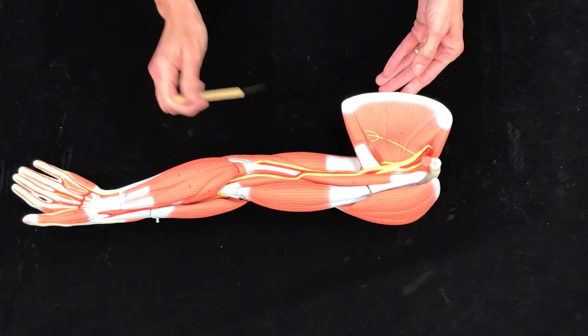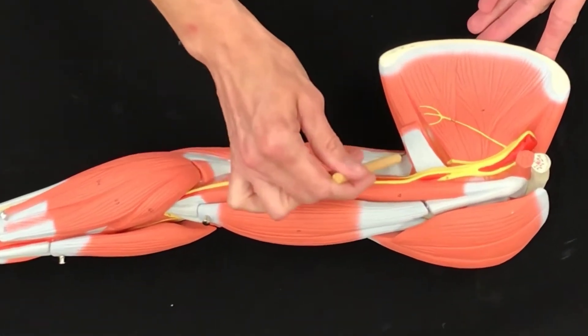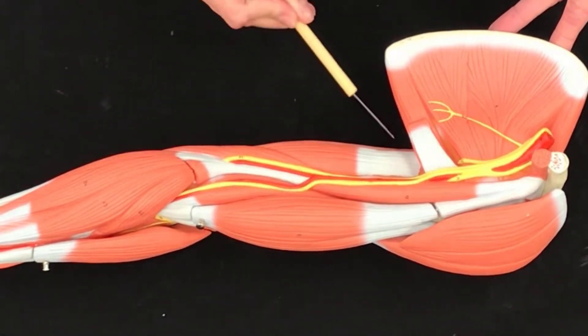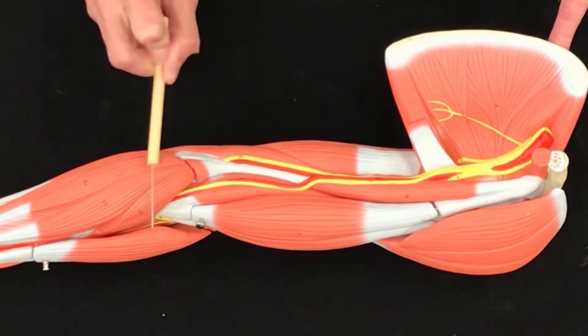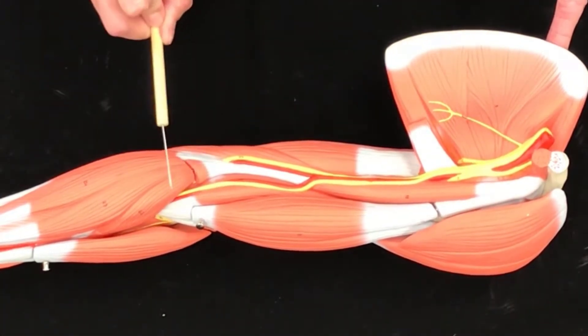So our first area is the axilla, or armpit. Then we have the inside of your elbow, which is antecubital.